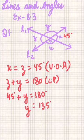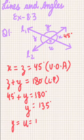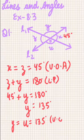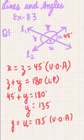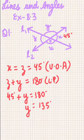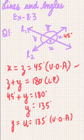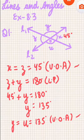y and u are also vertically opposite angles, so u equals 135 degrees as well. We now have all the values: y and u are 135 degrees, and x and z are 45 degrees. This was the answer to Question 1 from Exercise 8.3.